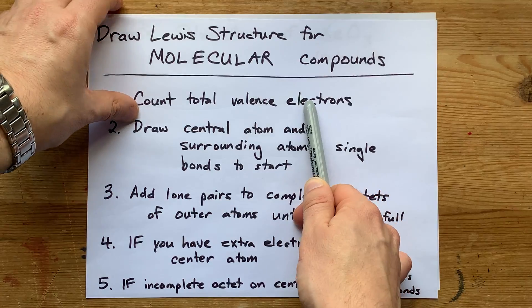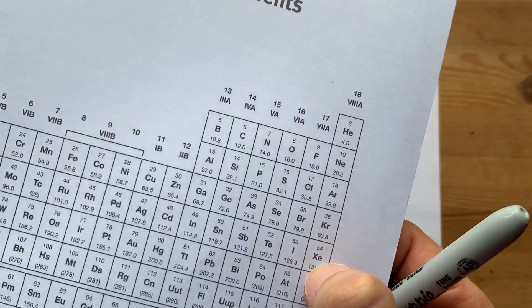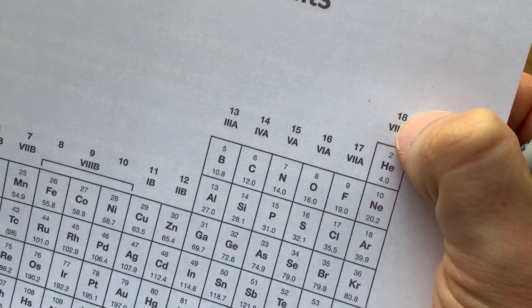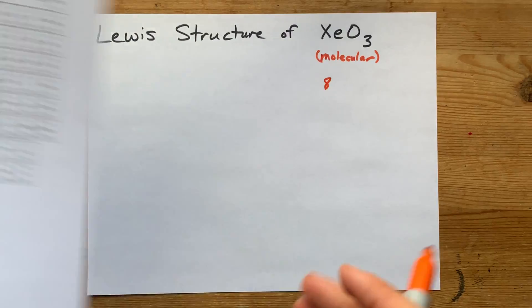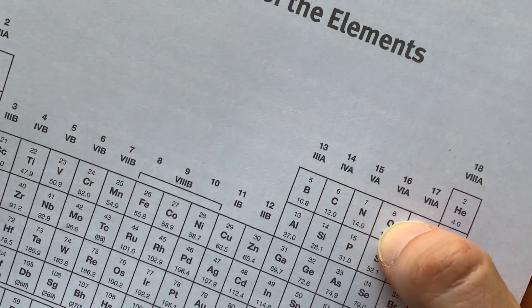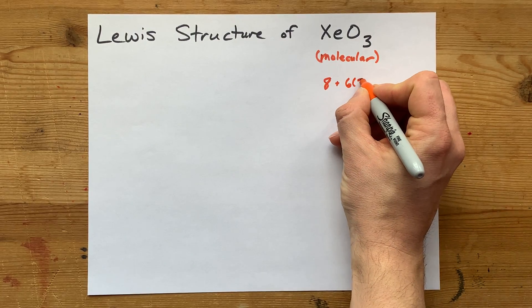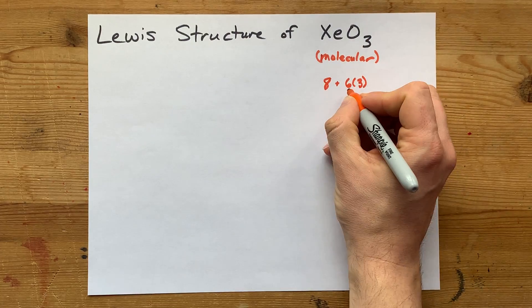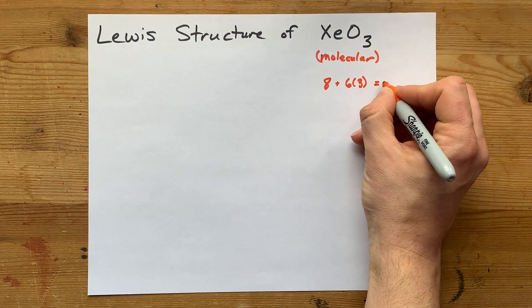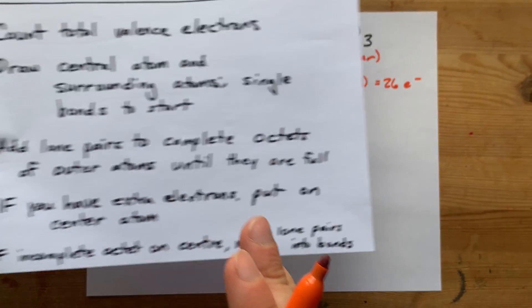You're going to count the total number of valence electrons that the atoms bring. Xenon in group 18 brings 8 valence electrons with it. Oxygen in group 16 brings 6 electrons with it. But there are 3 of them, so don't forget to times by 3. That's 18 plus 8 is 26 electrons total. So far, so good.